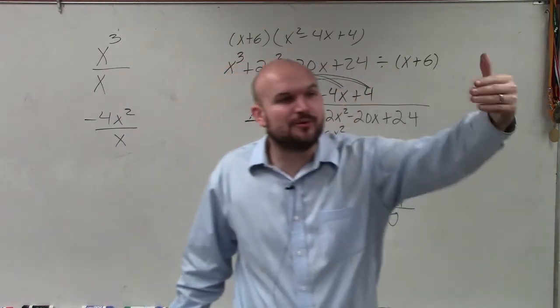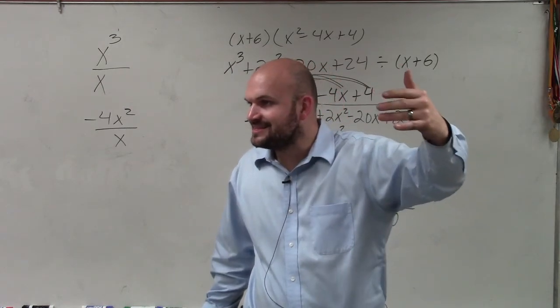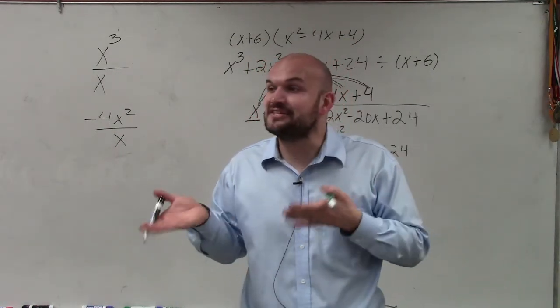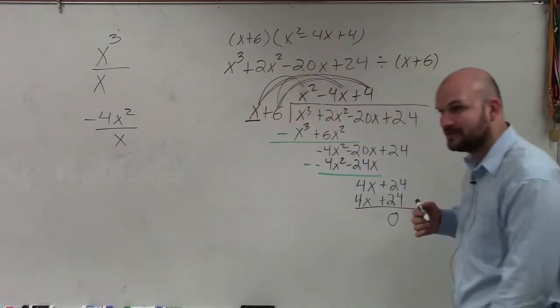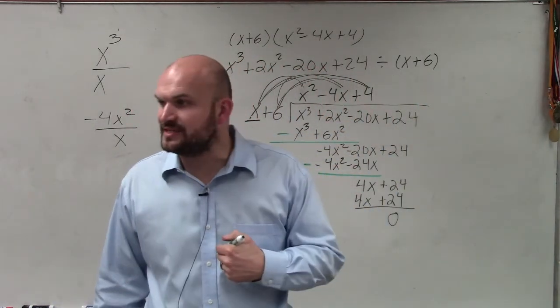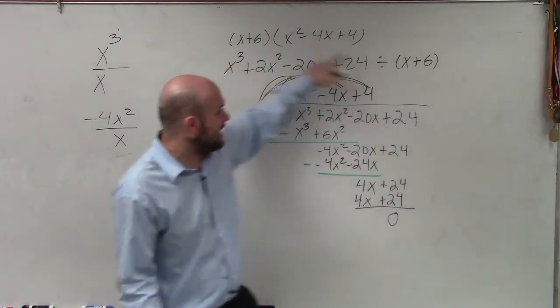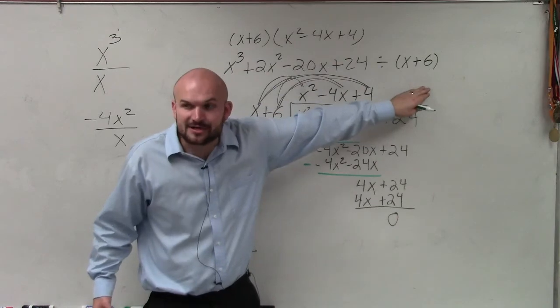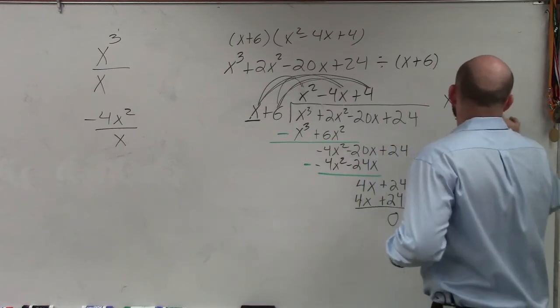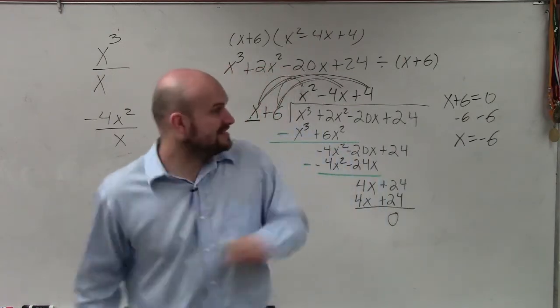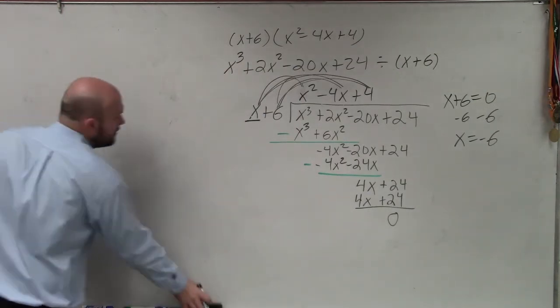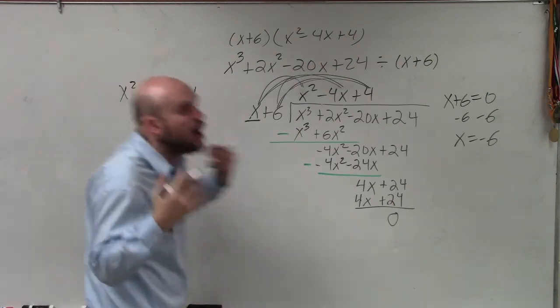And once we know factors, what can we find from factors? Zeroes. So how do we go from a factor to a zero? You set your factor equal to zero and solve. So if I was to ask you to complete long division and determine all of the zeros, what you could do here is if this evenly divides, which it does, that means this is a factor. So if I asked you for what was the zero, you would simply say x plus 6 equals 0, subtract 6, and say x equals negative 6.